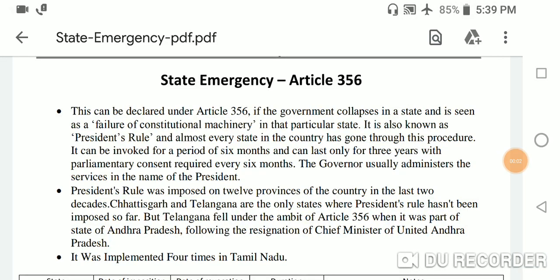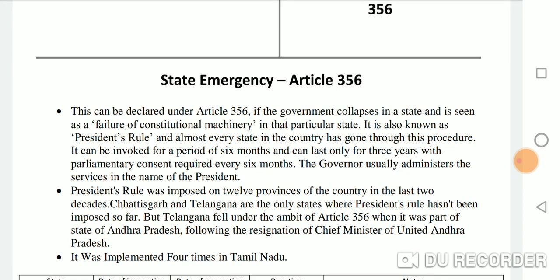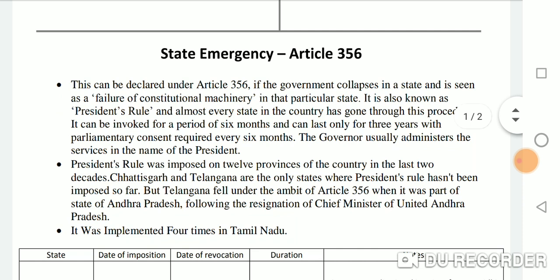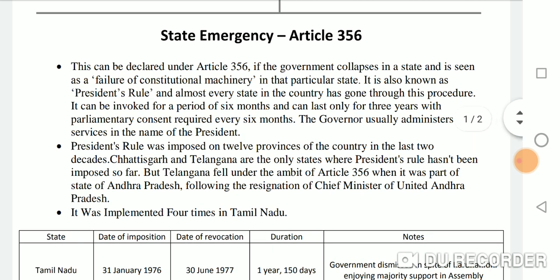State emergency under Article 356 can be declared if the government collapses in a state and is seen as a failure of constitutional machinery in that particular state. It is also known as President's Rule, and almost every state in the country has gone through this procedure. It can be invoked for a period of six months.